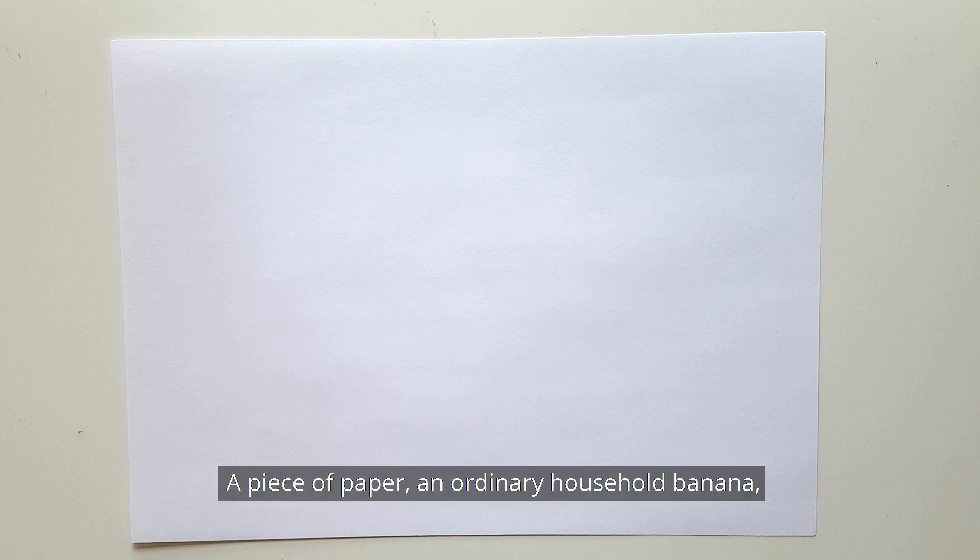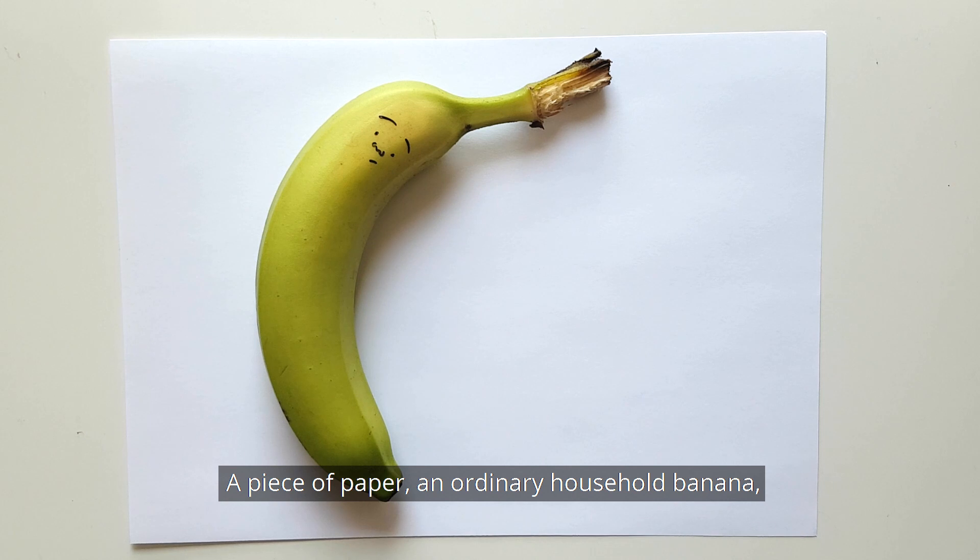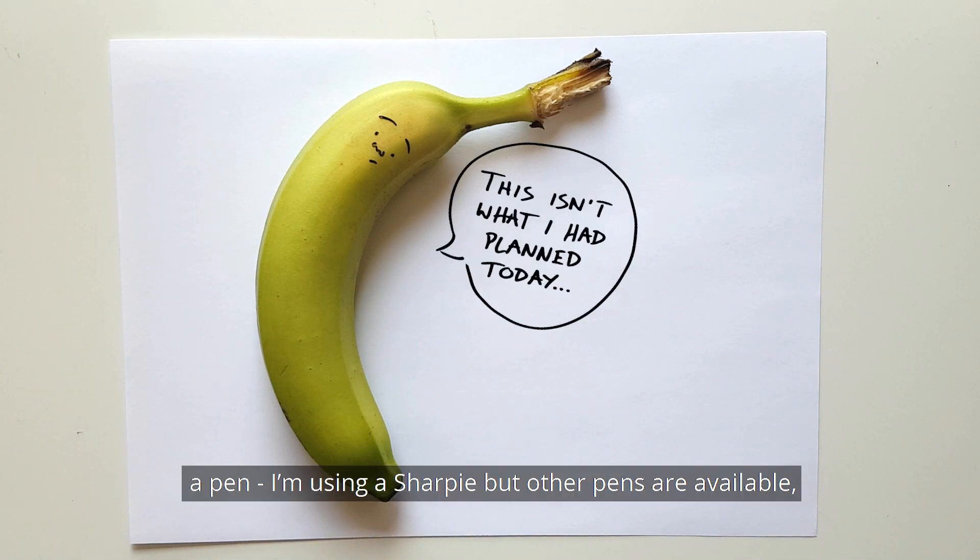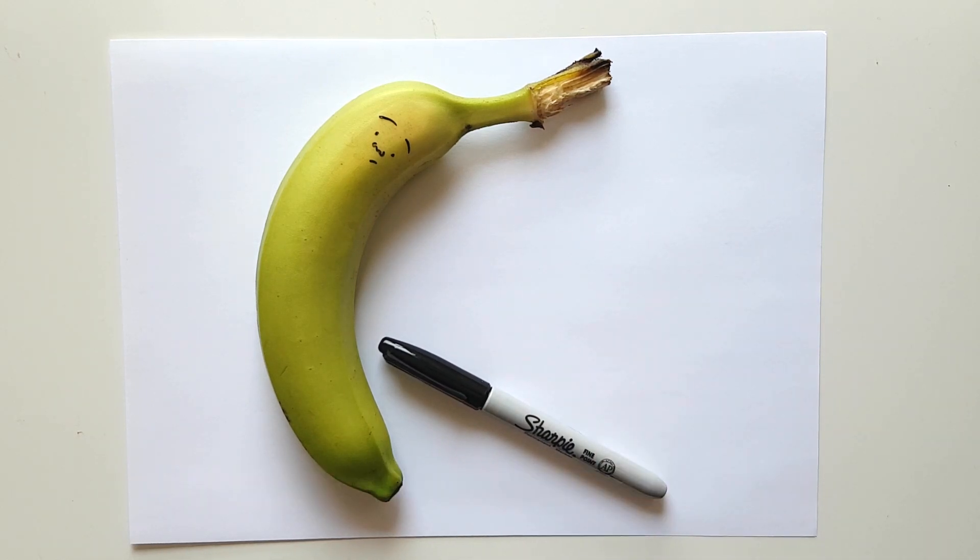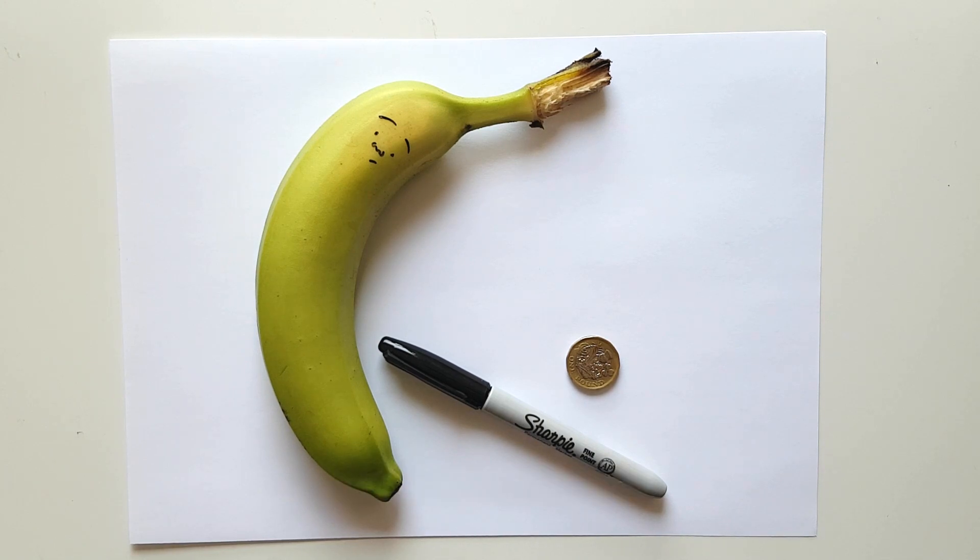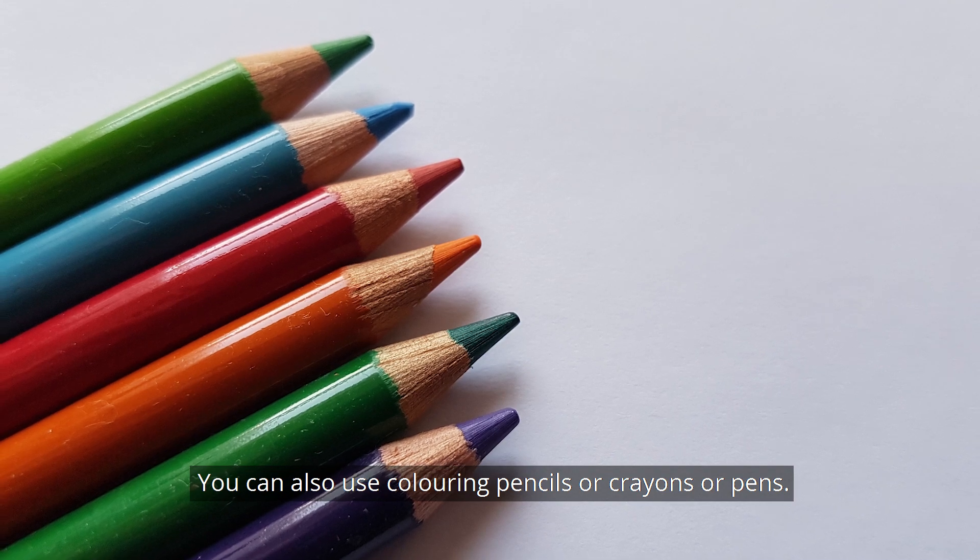So things you'll need: you'll need a piece of paper, you'll need an ordinary household banana, a pen (I'm using a Sharpie but other pens are available), and you'll need a coin of some sort, just a small coin. You can also use coloring pencils or crayons or pens.